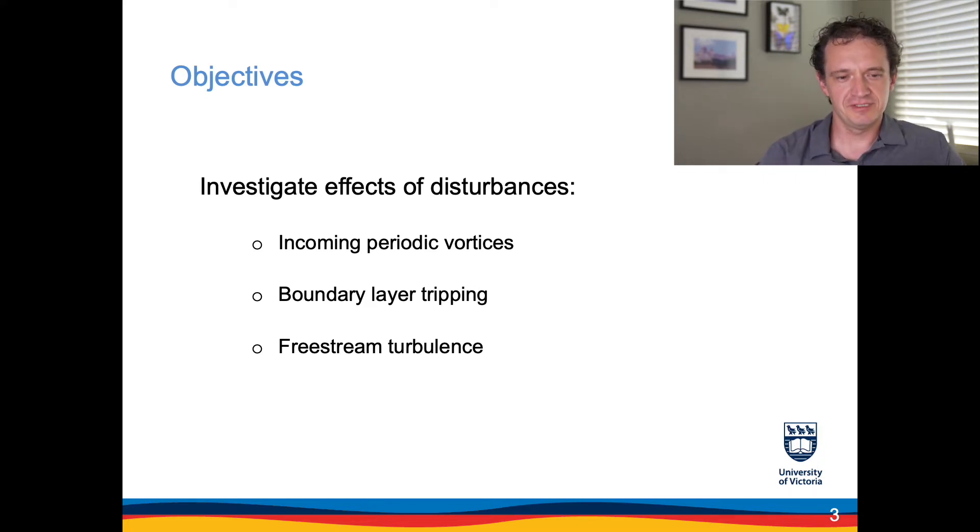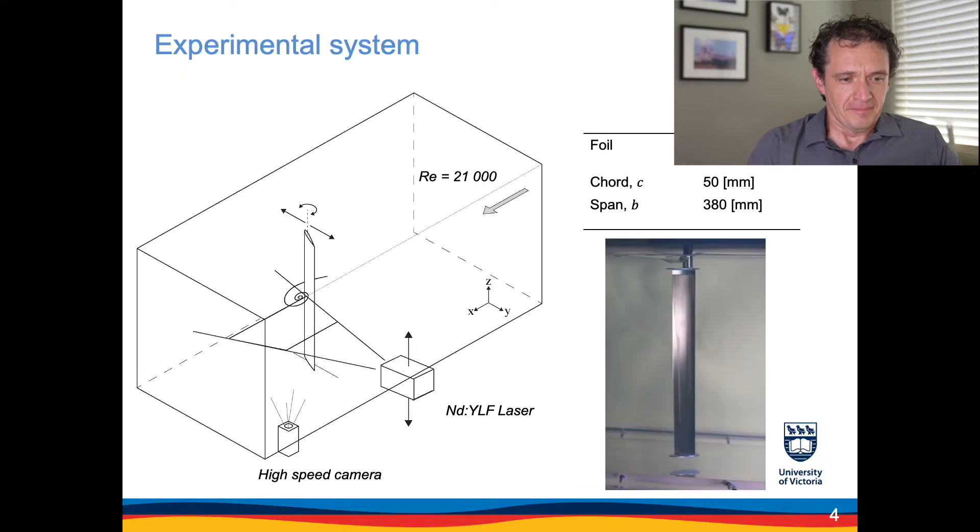This is a schematic of our experimental system. The foil NACA 0015 was positioned vertically in the water tunnel, and we used a combination of position tracking both in pitch and heave and particle image velocimetry to look at the dynamic response of the foil and the associated flow patterns.